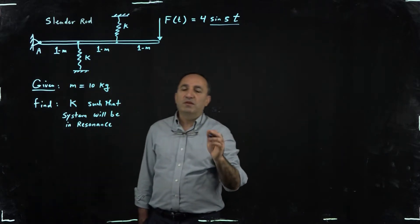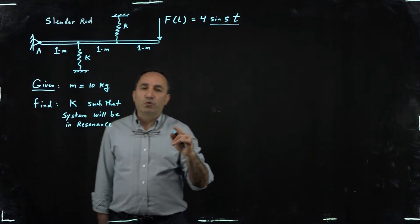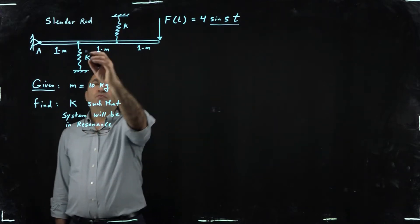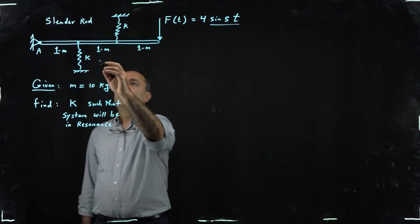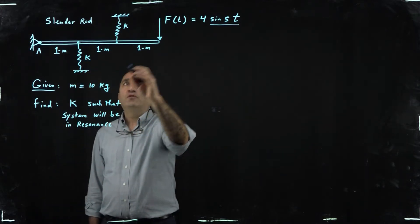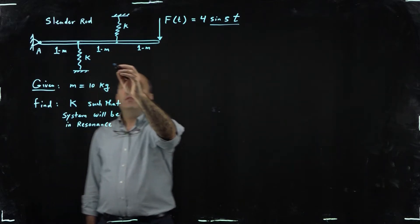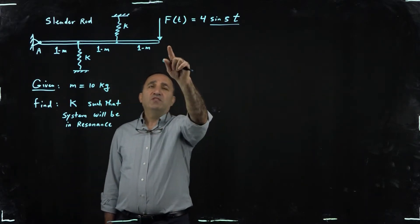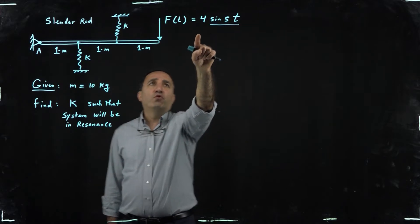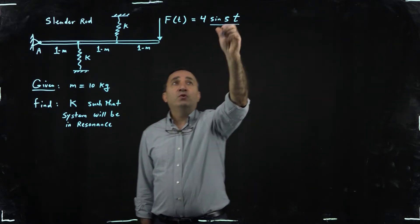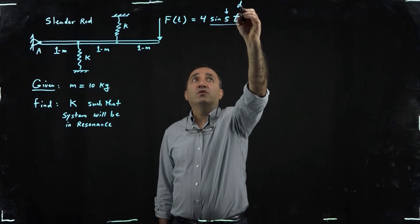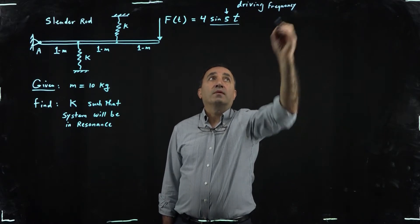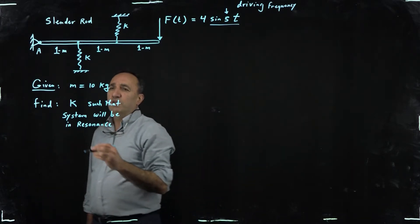Slender rod basically means that the ratio of the length to diameter is more than 10, at least 10, and the mass of this rod is 10 kilograms. Let's say you have two springs attached at different positions to this bar, and obviously this is pivoting about point A due to this applied force. The stiffness is unknown here, and as you could see the length of the bar is three meters, one one one. So this is subjected to a harmonic force with an amplitude of four, say four Newtons, and the frequency, and this is typically called the driving frequency, the input frequency, and the frequency is five.